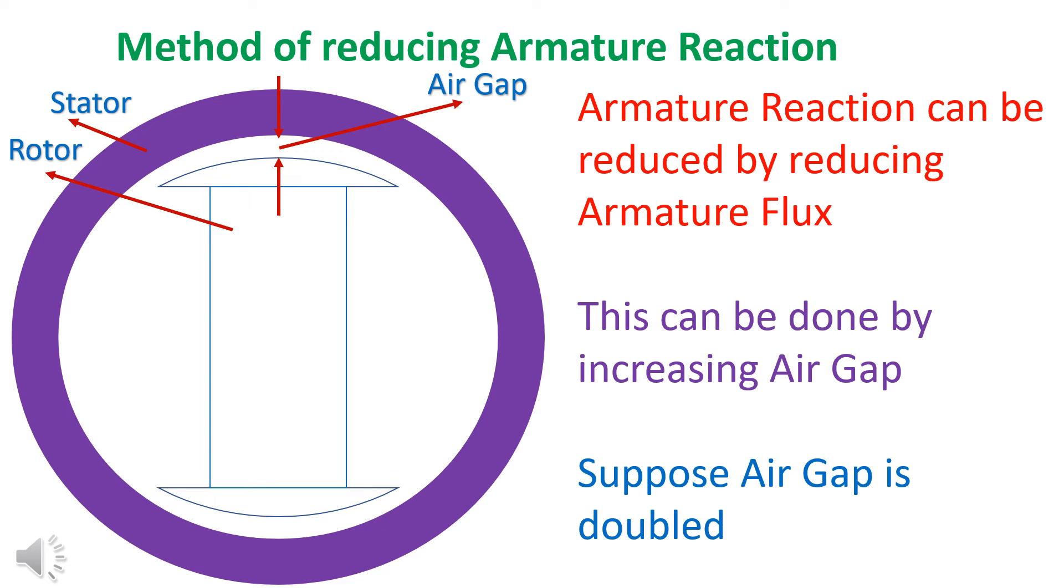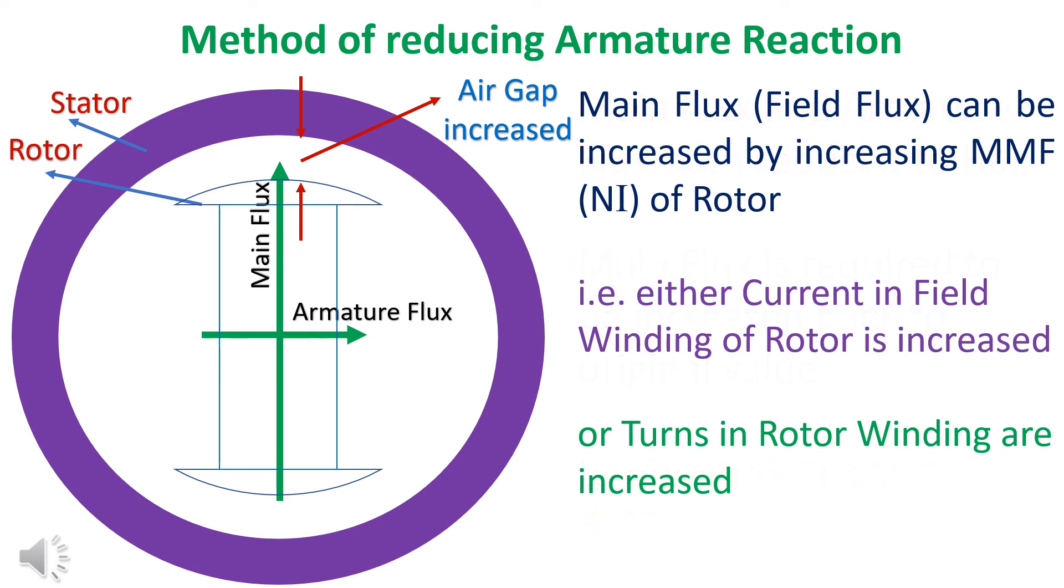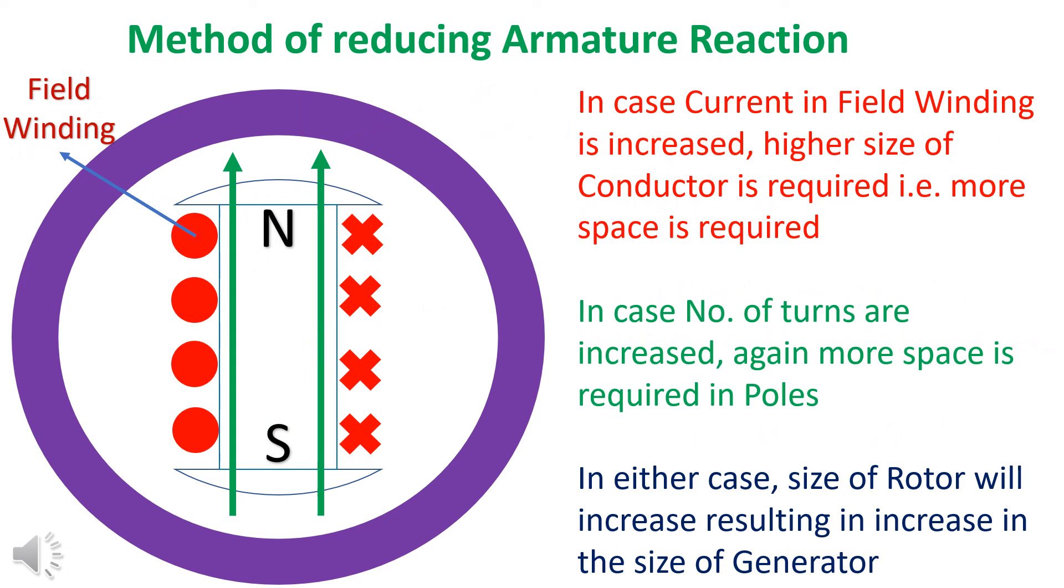Armature reaction can be reduced by increasing air gap. But main flux also reduces. Main flux is required to be increased to obtain the required EMF. Main flux can be increased by either increasing field current or number of turns in the rotor. In either case, size of rotor increases, resulting in increase in the size of the generator.